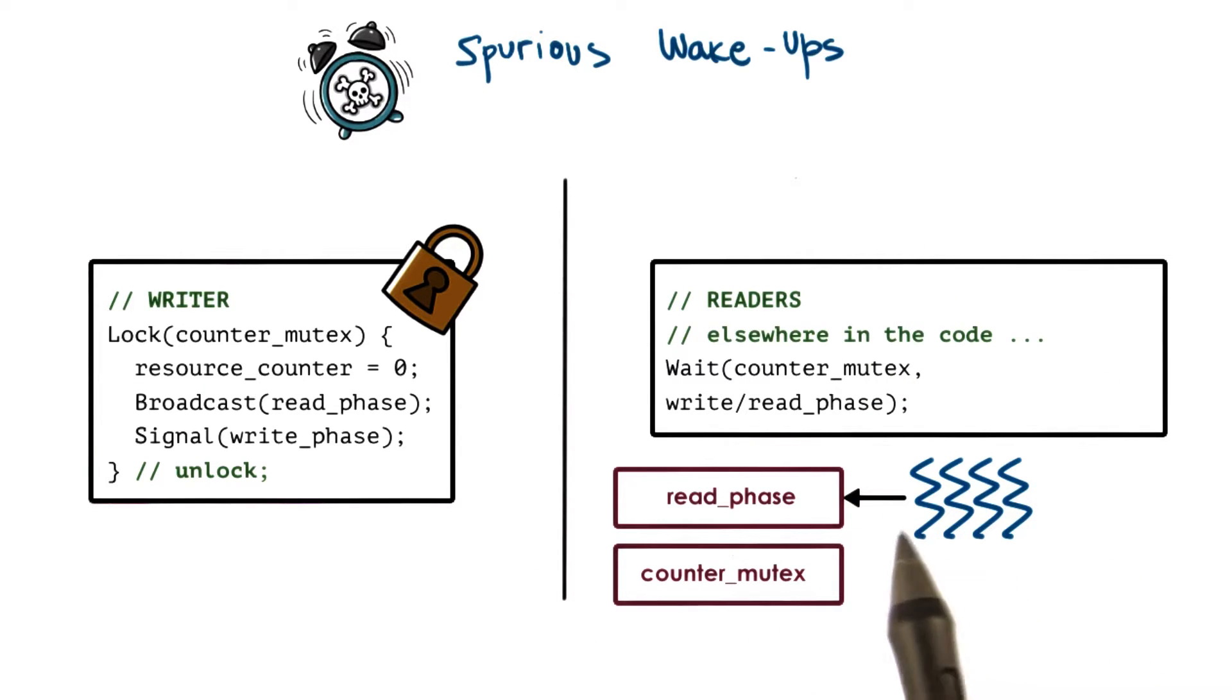readers for instance are waiting on a condition variable read phase. So there are a number of readers that are associated with the wait queue that's part of that condition variable.